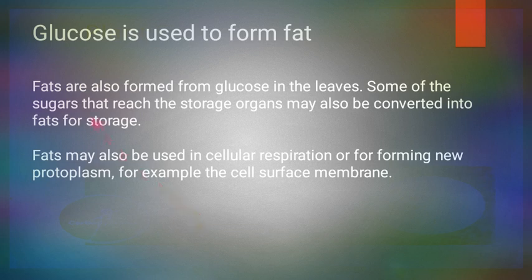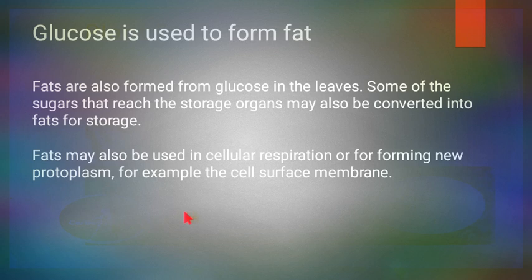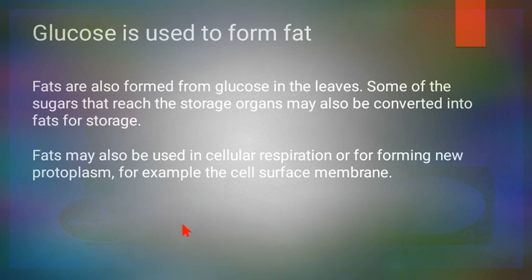Fats are also formed from glucose. Some of the sugar that reaches storage organs may be converted into fats for storage. Fats may be used in cellular respiration or for forming new protoplasm — for example, the cell membrane. The cell membrane is made up of protein and lipids, so plants need to make lipids and fats for their cell membranes.